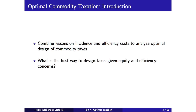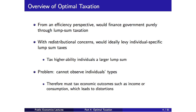The way you want to think about optimal commodity taxes is that we're combining the lessons we've learned on incidence and efficiency costs of taxes to now ask the normative question: what's the best tax system, given some objective function? That objective function is typically going to embody equity and efficiency concerns. We're concerned about the size of the pie and how the pie is distributed, and we're going to build both of those in to say something about the optimal system.